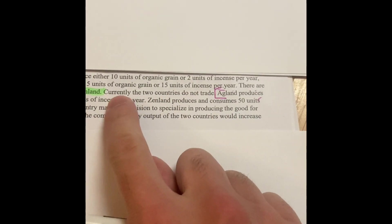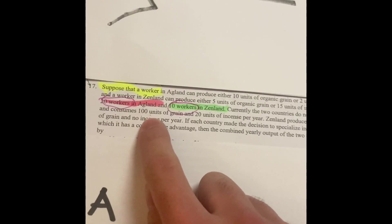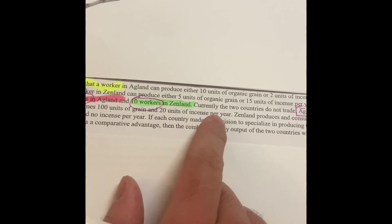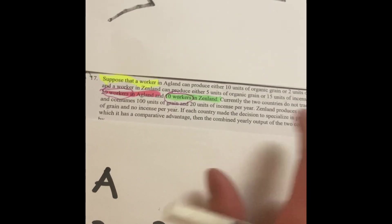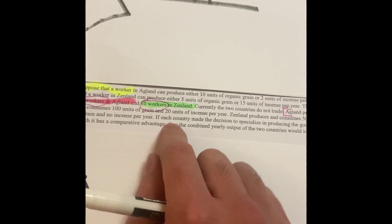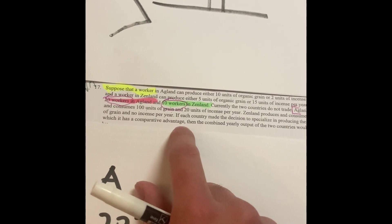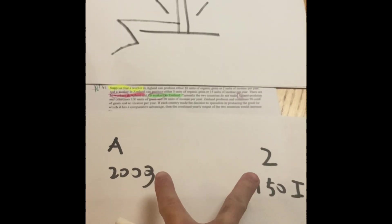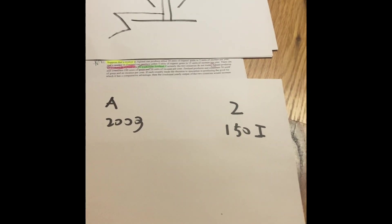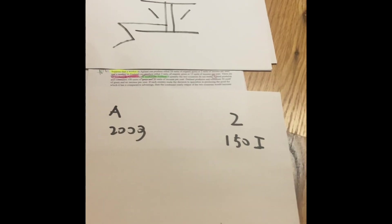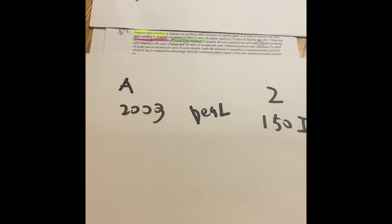So we understood that the countries do not trade. However, Agland produces and consumes 100 units of grain and 20 units of incense per year. Zenland produces and consumes 50 units of grain and no incense per year. If each country made the decision to specialize in the production of the good that they're really good at, at a comparative advantage, then the combined yearly output of the two nations will cause an increase. And so we already know that these two countries are going to specialize into something that they're really good at. But now, they want to make a deal. What they want to do is not trade, but to combine their resources together.